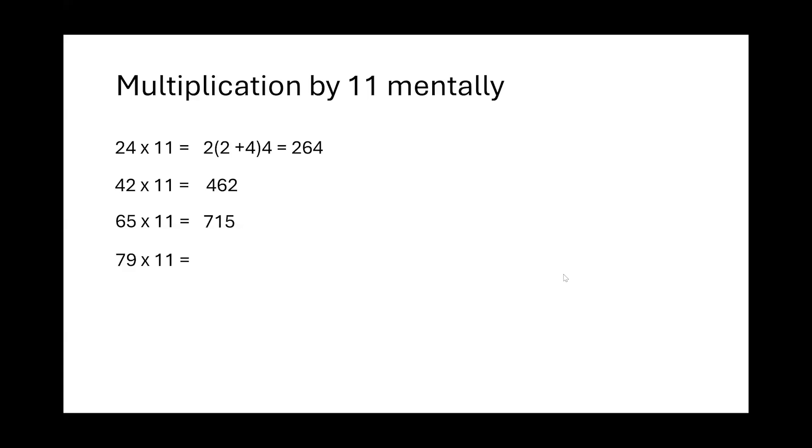Why don't you try 79 into 11? So you start with 7, but then 9 plus 7 gives you a carry forward. 16 has a carry forward of 1. So your answer would be 8, 6, 9. Try 87 into 11. Absolutely right. You straight up get the answer as 957. Perfect. How about 98 into 11? Yes. Correct. 1078. So you've seen multiplication by 11 was pretty easy.